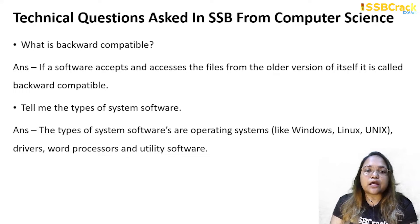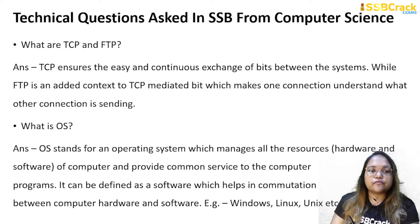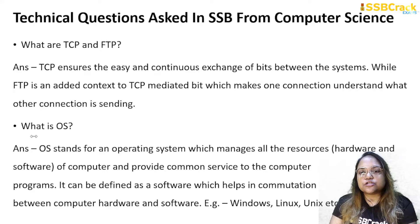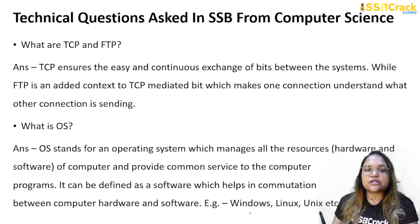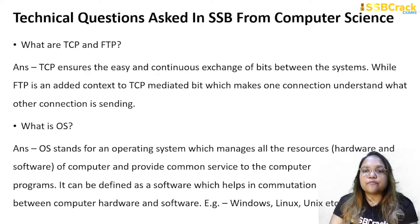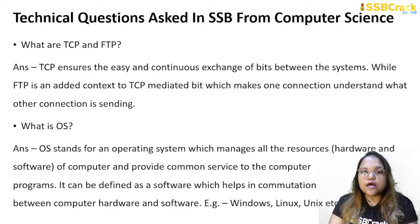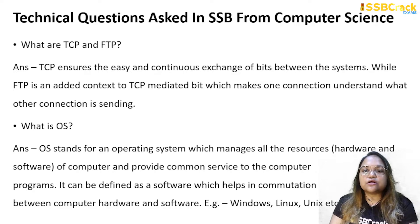Tell me the types of system software. The types of system software are operating systems like Windows, Linux, Unix, drivers, word processors and utility software. What are TCP and FTP? TCP ensures easy and continuous exchange of bits between systems, while FTP is an added context to TCP-mediated bit transfer which makes one connection understand what the other connection is sending. What is an OS? OS stands for operating system, which manages all resources like hardware and software of a computer and provides common services to computer programs.